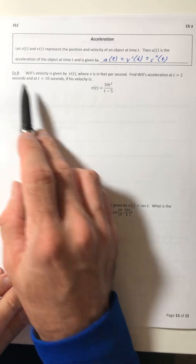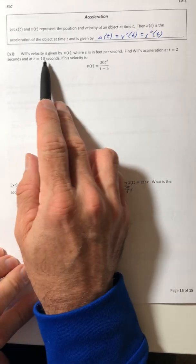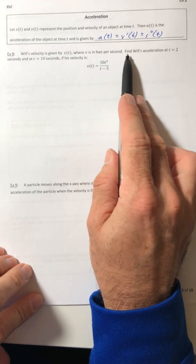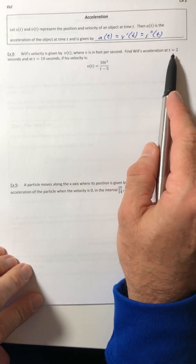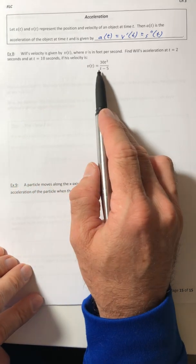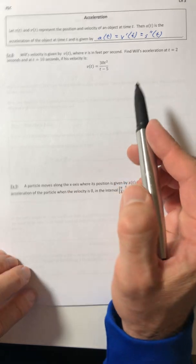So let's take a look at example 8. Will's velocity is given by v of t, where v is in feet per second. Find Will's acceleration at t equals 2 seconds and then again at 10 seconds. If his velocity is 30t squared over t minus 5.